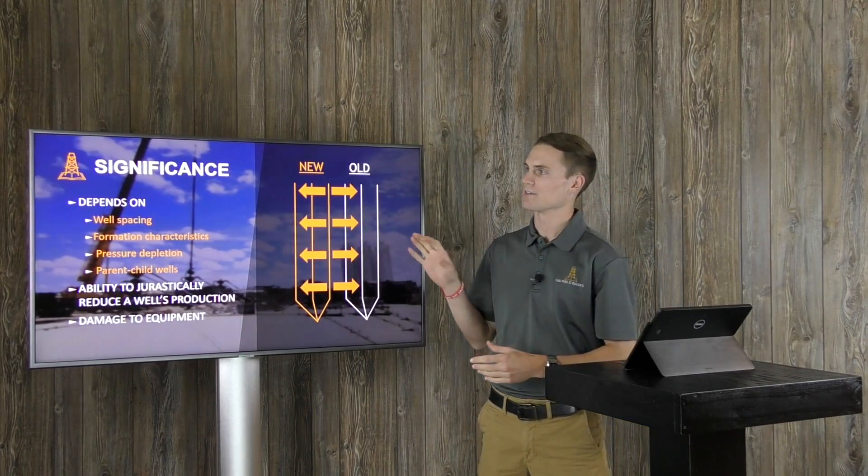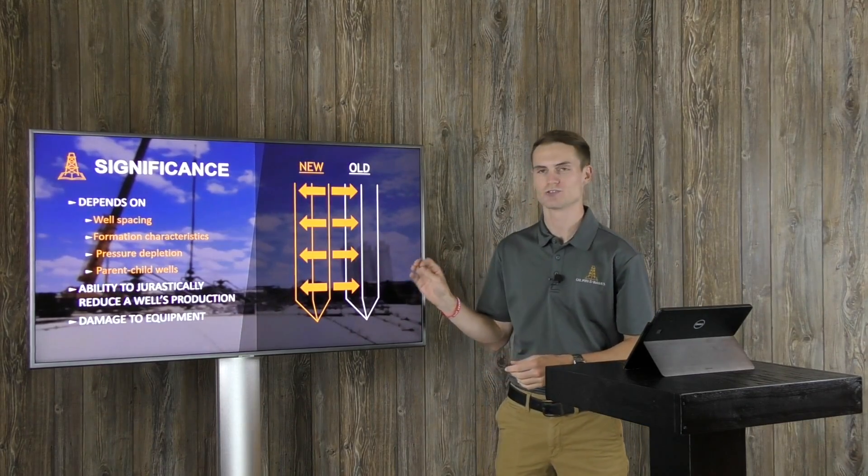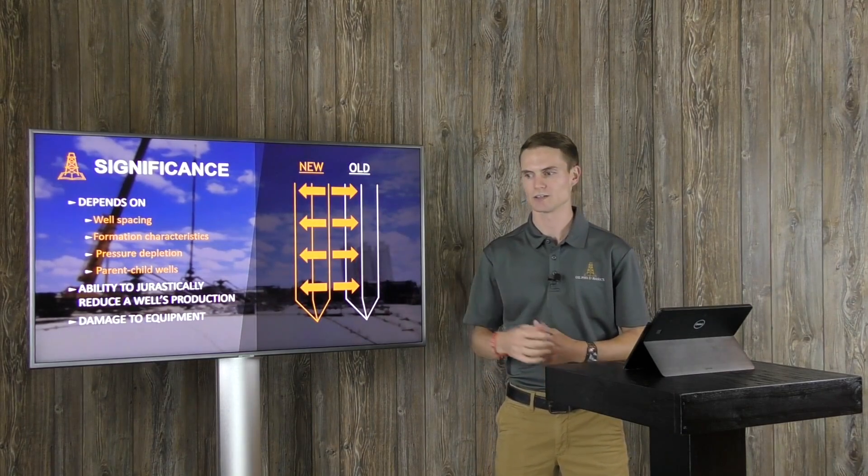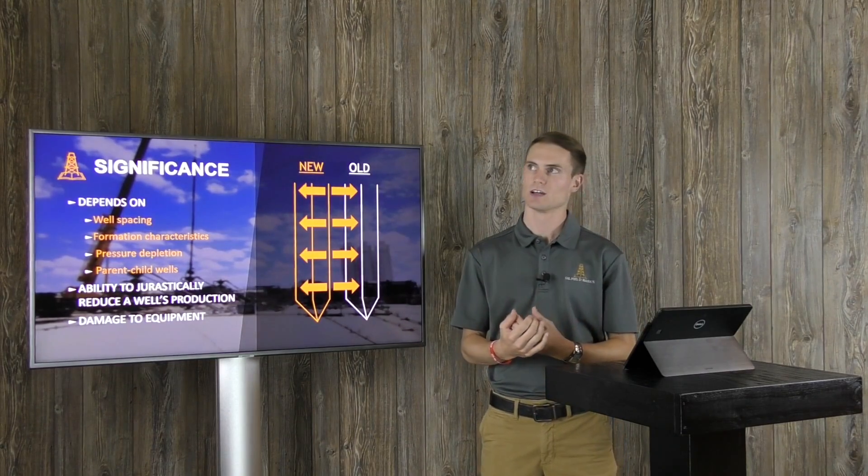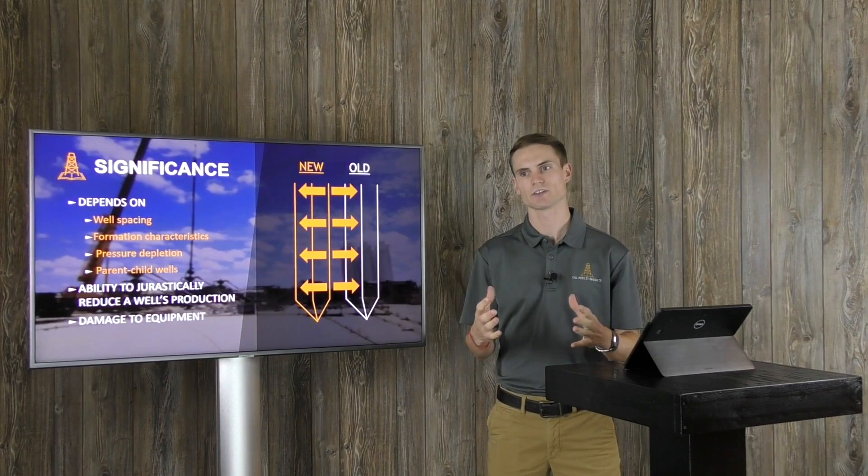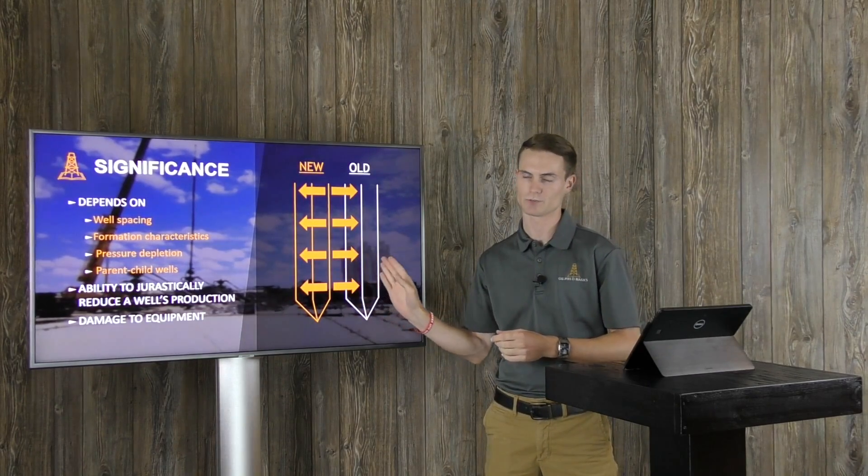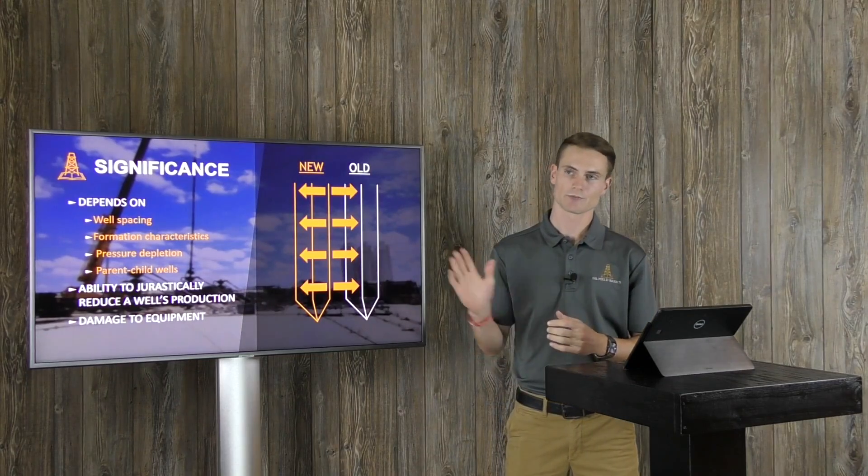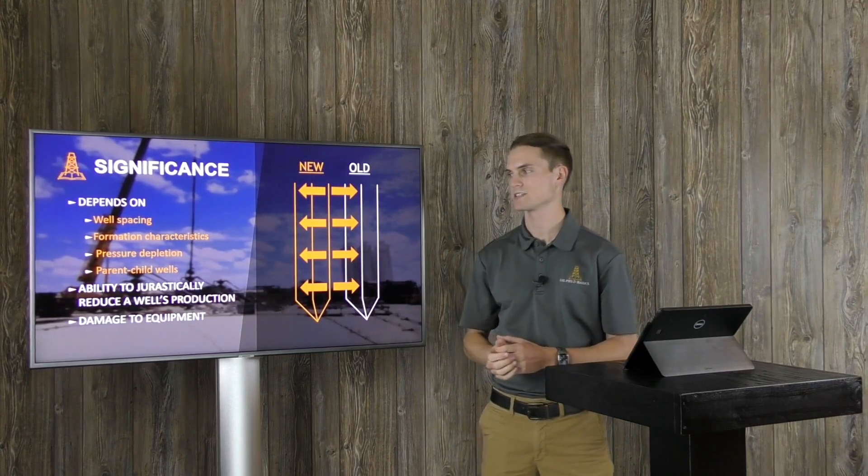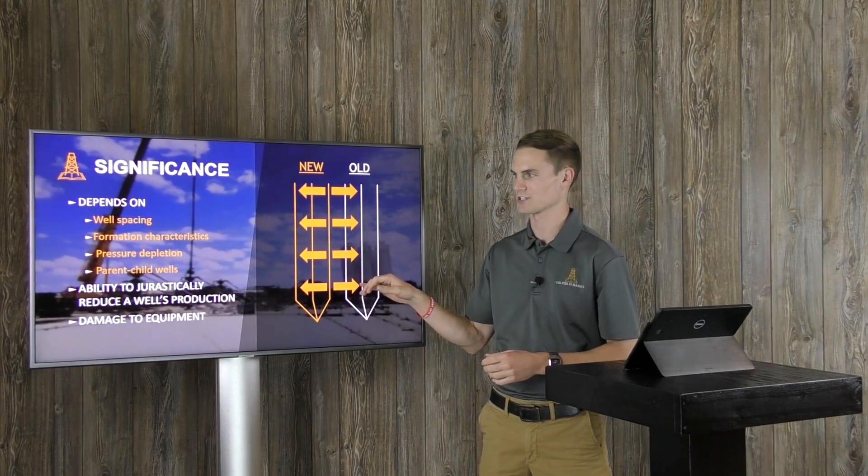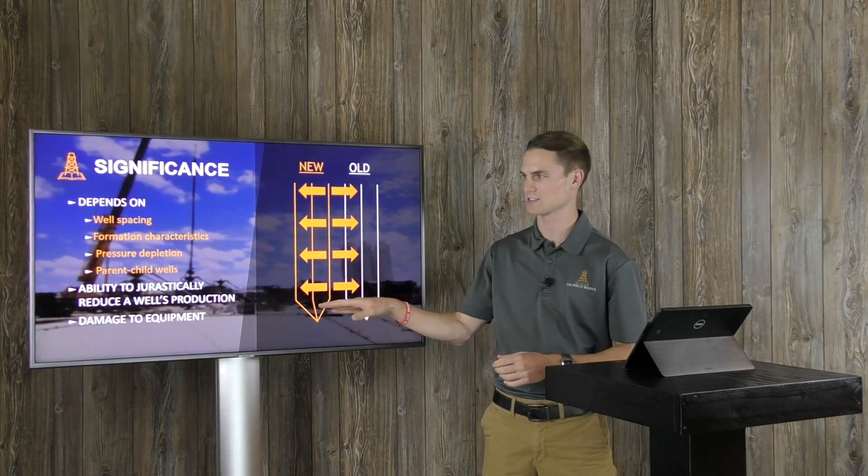It's also important to note that a frack hit has the ability to drastically reduce a well's production. So again, like I said before, you can see a little bit of a pressure difference. You can see a pressure response from a frack hit from a child to a parent. Also, it can range clear to where you're basically just trashing that well, really hammering on its production. It's really going to change. And we're going to talk about that more in the next slide or two.